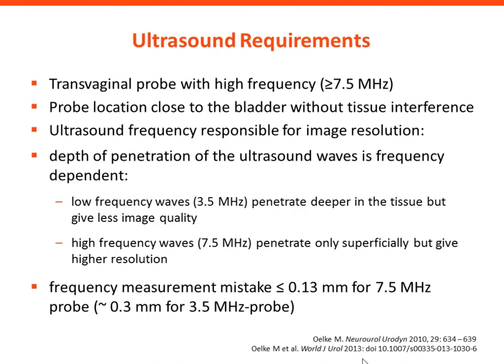We always have to consider that the ultrasound frequency we use is important. The depth of penetration of ultrasound waves is frequency dependent. If you use a 2.5 or 3.5 MHz ultrasound probe, you get very deep penetration but less image quality. If you use high frequency ultrasound waves — for example, 7.5 MHz or more — it only penetrates superficially, but gives higher image resolution. So you have to use a high frequency ultrasound probe and bring it very close to the organ, which is guaranteed with the transvaginal technique.